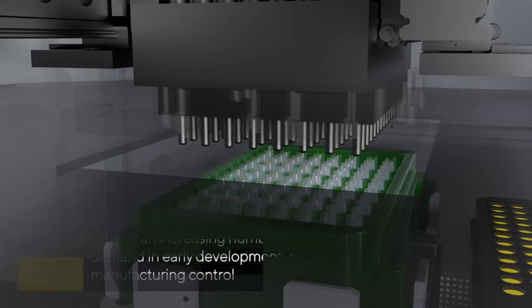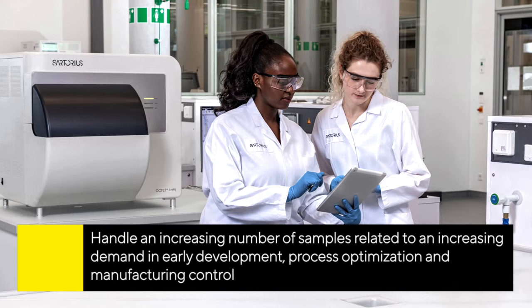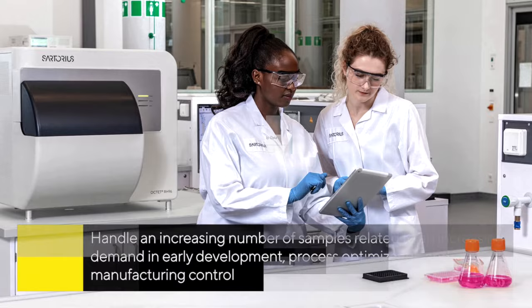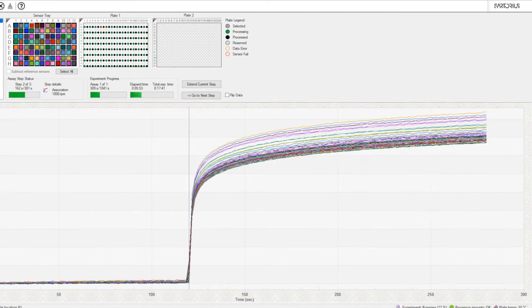Key applications benefiting from the unique strengths of the Octet RH systems include off-rate ranking for clone selection, tighter determination, and antibody competition. The RH96 allows complete tighter determinations for a 96-well plate of IgGs in just 2 minutes.